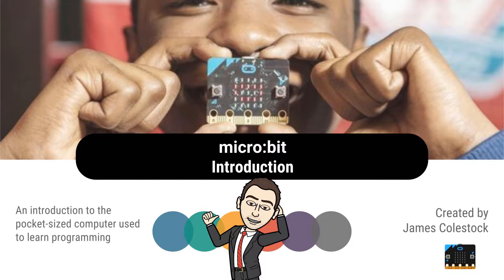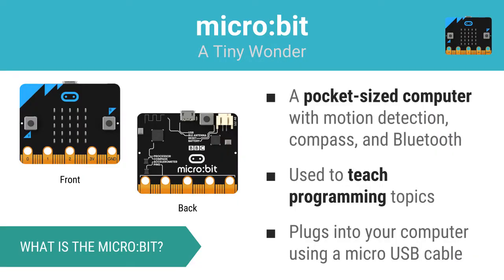We are going to be using a pocket-sized computer called the MicroBit to learn the basics of programming. The MicroBit is a tiny computer used to teach programming topics. Originally used in the United Kingdom, the MicroBit is a simple programmable device with a handful of built-in components that plugs into your computer via a micro-USB cable.